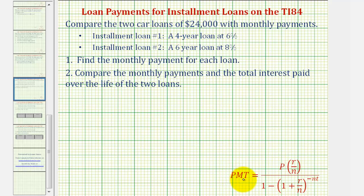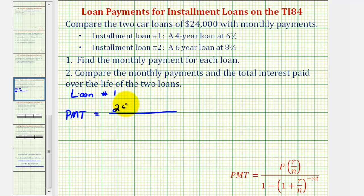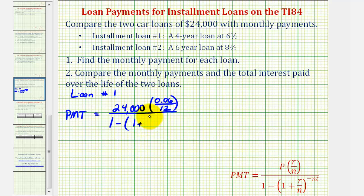To determine the monthly payments, we'll be using the installment loan formula, where PMT represents the monthly payment. For loan number one, the monthly payment equals a quotient where P is the loan amount of $24,000. R is the annual interest rate expressed as a decimal, and N is the number of payments per year. For loan one, the rate is six percent, so that's 0.06 divided by N, which is 12 since we're making monthly payments, divided by one minus the quantity one plus R divided by N — which is 0.06 divided by 12 — raised to the power of negative N times T. Loan one is for four years, so T is four.